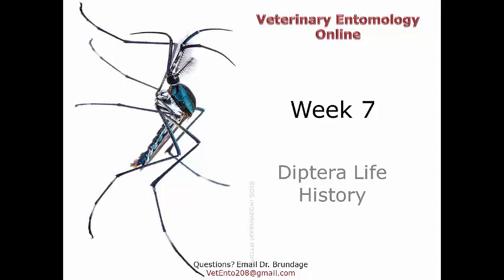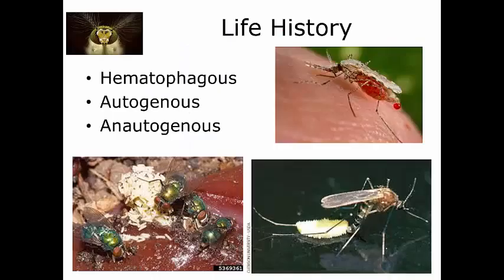Now let's take a look at the general diptera life history. We're going to spend the rest of this unit talking about those species that are important to animals — specifically those species of flies that are especially important to animals, and the way that these flies can be important is how they attack or affect animals and their environment.